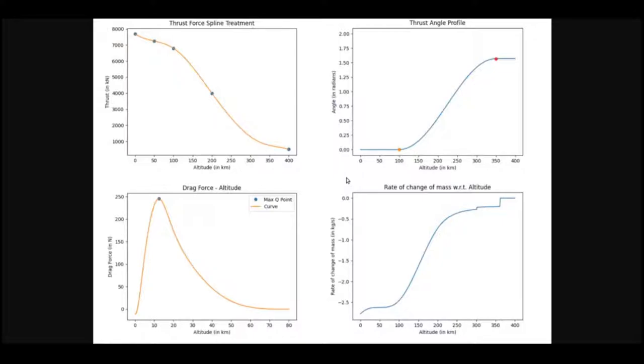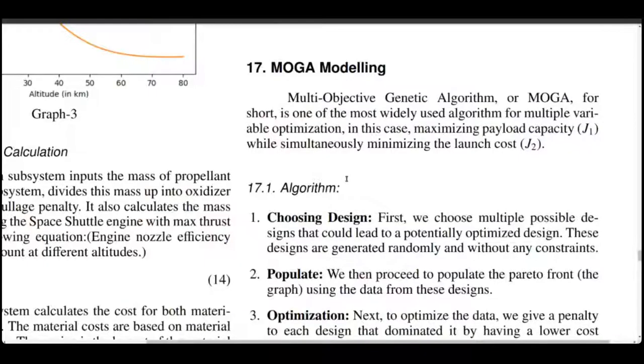Now, these trajectory equations are optimized but for maximum efficiency, we need to optimize the rocket model for increasing its payload capacity while simultaneously minimizing its cost. Multi-objective genetic algorithm aka MOGA provides us with a very clear and easy way to do so. We get a range of optimum values following which we can design our rocket as close to perfect as possible.